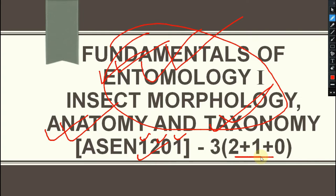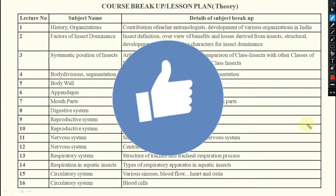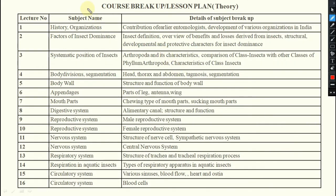Without wasting time, let's start. We will first discuss theory topics, then practical topics. The first theory topic is history and organizations — the different historical aspects of entomology, who the different entomologists are, the Government of India's role, different personalities and developments, and different organizations with their headquarters that deal with the department of entomology.